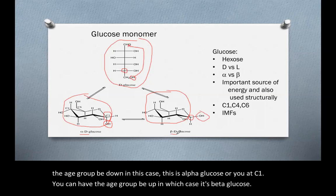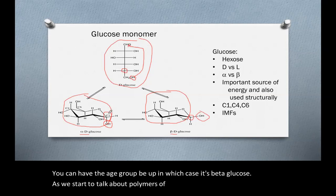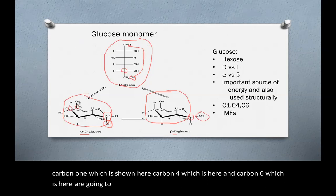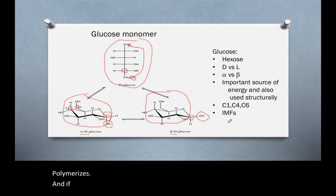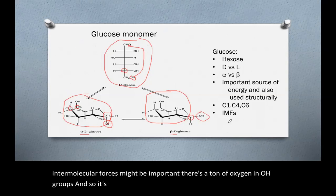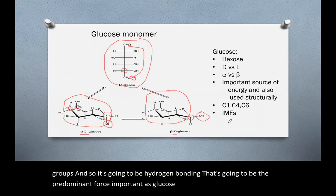As we start to talk about polymers of glucose, we're going to see that carbon 1, carbon 4, and carbon 6 are going to be the ones that are important as glucose polymerizes. If we look at glucose and think about what type of intermolecular forces might be important, there's a ton of oxygen in OH groups. And so it's going to be hydrogen bonding that's going to be the predominant force important as glucose both polymerizes and as those polymers start to stack on top of each other.